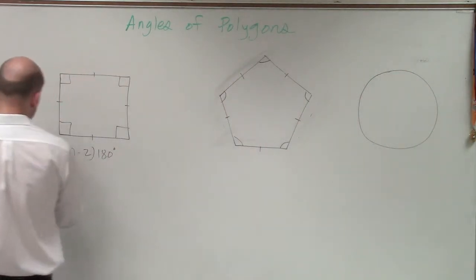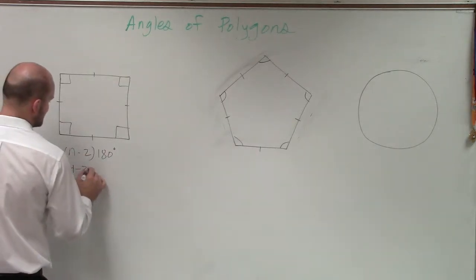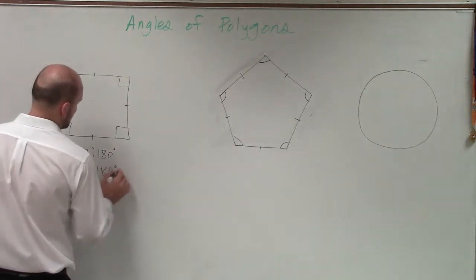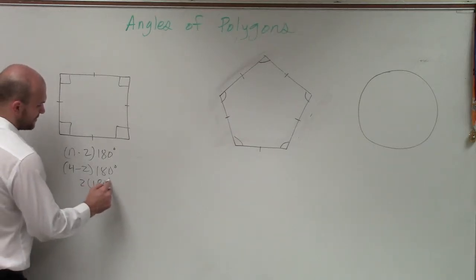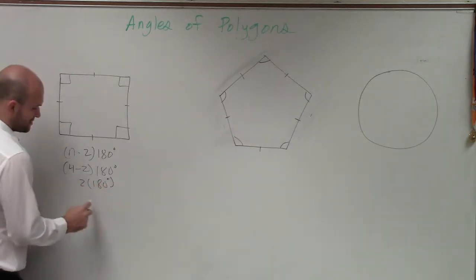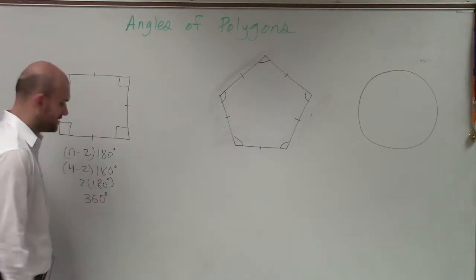So since we have four sides, the sum of my interior angles is going to be 4 minus 2 times 180, which is going to be 2 times 180, which is 360 degrees.